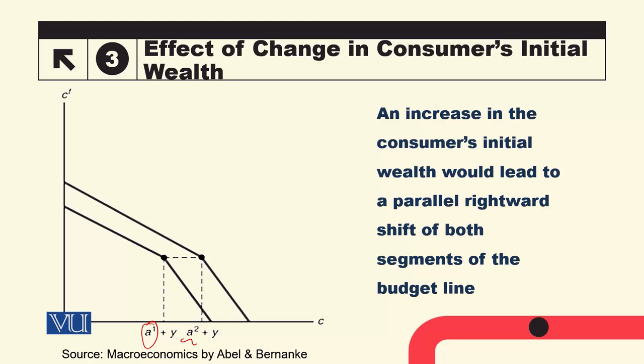The borrowing side portion will also shift in the same manner. So today we saw that if interest rates are different — borrowing rate and lending rate — then what kind of budget constraint emerges, how changes in those rates affect it, and what impact they have on the consumer's choices. Thank you very much.